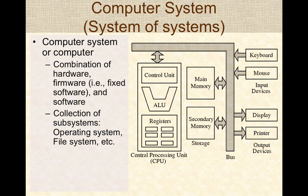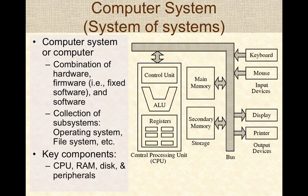A modern computer system is essentially a system of systems. It consists of a combination of hardware devices, firmware that is hardwired onto the computer, and a lot of software. The key components include the central processing unit (CPU), RAM or random access memory also called the main memory, disks that store data, and peripherals such as monitors, printers, keyboards, and mice.